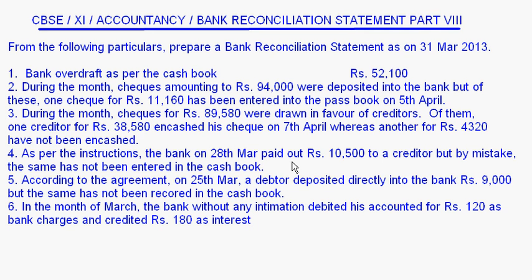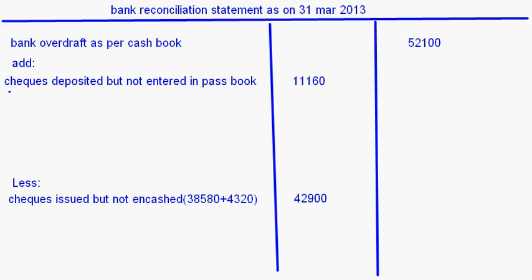As per the instructions, the bank on 28th March paid out rupees 10,500 to a creditor, but by mistake the same has not been entered in the cash book. This amount has been paid — it's a payment — so the overdraft balance increases as per the bank, because they debited this amount. But it has not been entered in the cash book, so as per the bank the overdraft balance is more. This should be added: payment made to a creditor directly by the bank — 10,500.